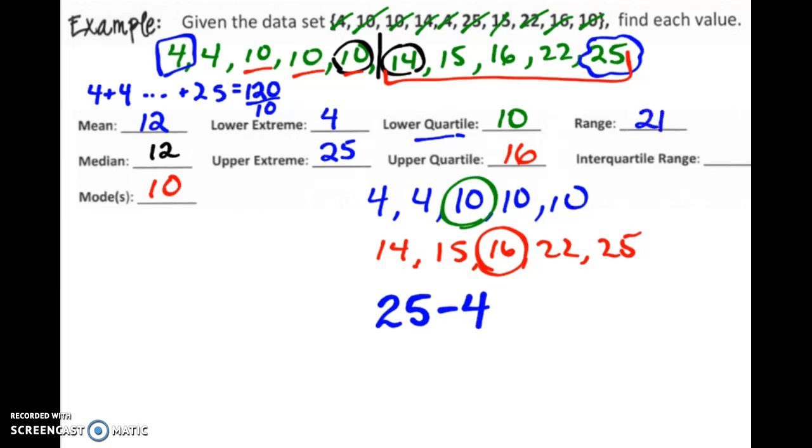And then lastly, the interquartile range, a lot of times this is abbreviated IQR, the interquartile range. So from the smallest, the lower quartile, to the biggest, the upper quartile, what's the range of that? So in this case, I'm going to do 16 - 10, and I'm going to get a value of 6 for my IQR.